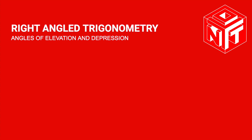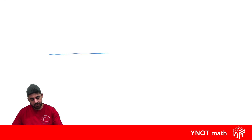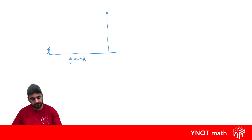Angles of elevation and depression. In order to understand this we need to draw some diagrams. Let's say we have the ground here and you are standing on the ground with something tall that you were looking at at the top. Your line of sight will be looking at it like this, and the angle that it makes with the ground we call the angle of elevation.